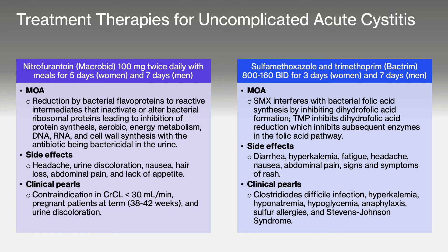Now we're going to get into first-line treatment therapies for uncomplicated acute cystitis. The first one is macrobid, or nitrofurantoin, at 100 milligrams twice daily with meals for five days for women and seven days for men. This medication is considered first-line because it has lower resistance rates in the community and very good tolerability. It is contraindicated in a creatinine clearance of less than 30 milliliters per minute and in pregnant patients at term (38 to 42 weeks), and it has a potential for urine discoloration, which needs to be communicated to the patient.